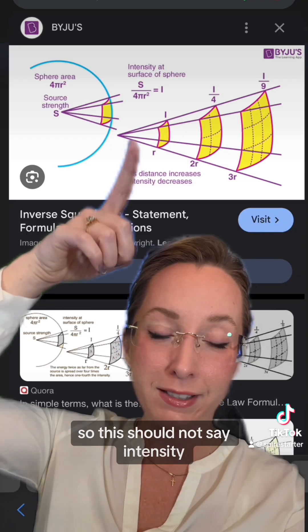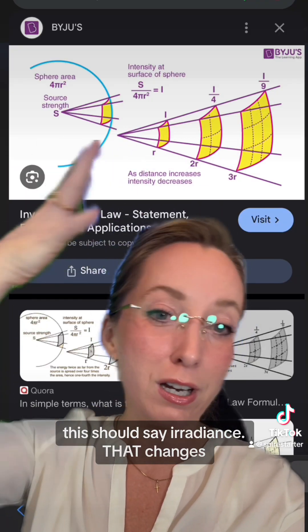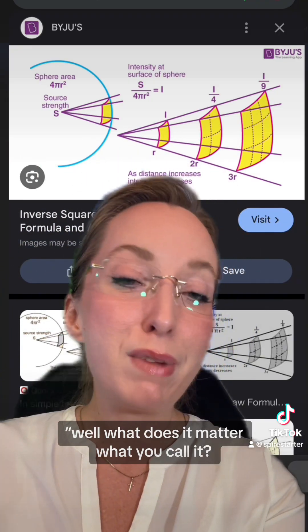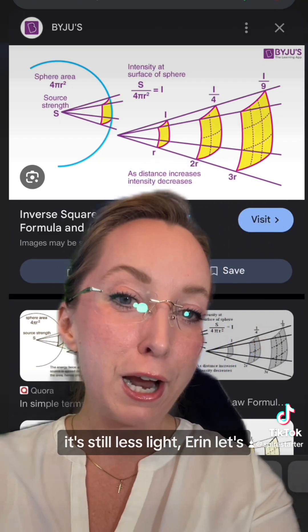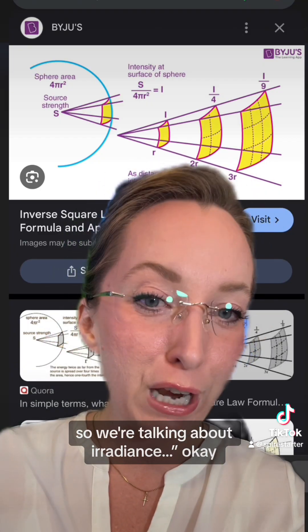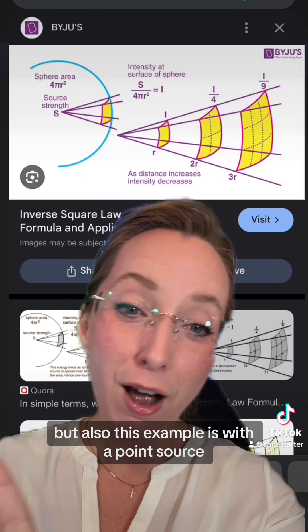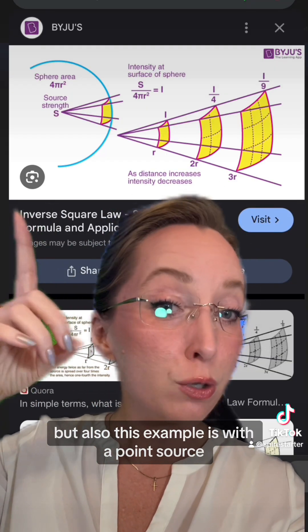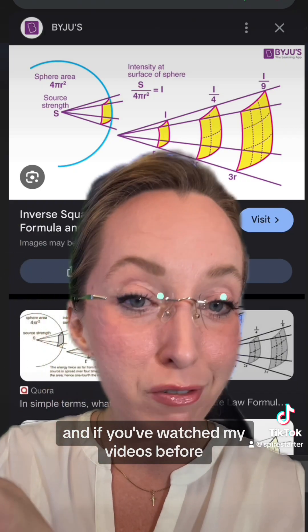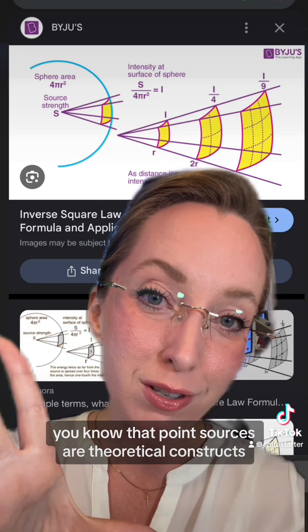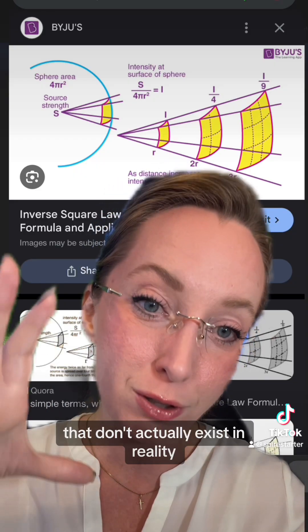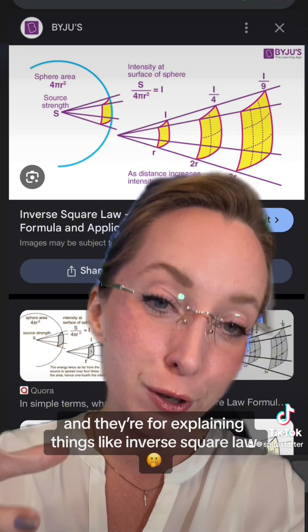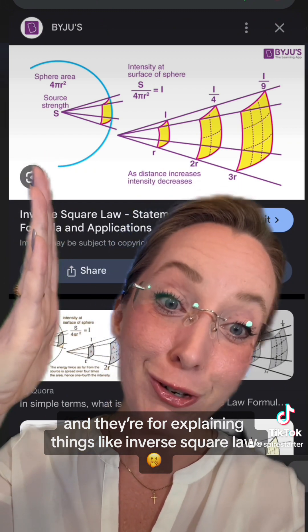That's one thing. Okay, so this should not say intensity, this should say irradiance, that changes. And maybe you're thinking, well, what does it matter what you call it? It's still light, Erin. So we're talking about irradiance. Okay, but also, this example is with a point source. And if you've watched my videos before, you know that point sources are theoretical constructs that don't actually exist in reality, and they're for explaining things like inverse square law.